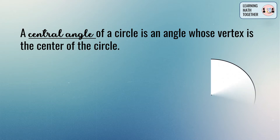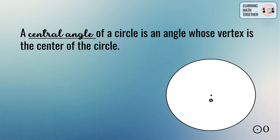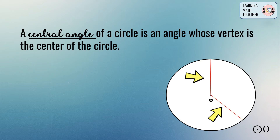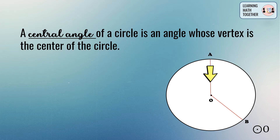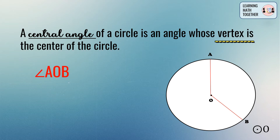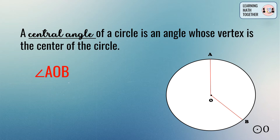Let us take a look at circle O. As you can see, point O is the center of the circle. Now let us draw two radii here — the two radii will serve as the arms of the angle. We have an angle AOB, and this angle is a central angle because its vertex is the center of the circle.